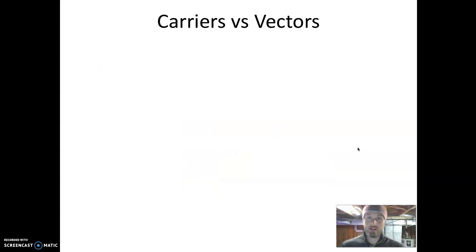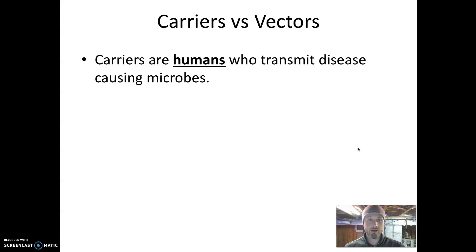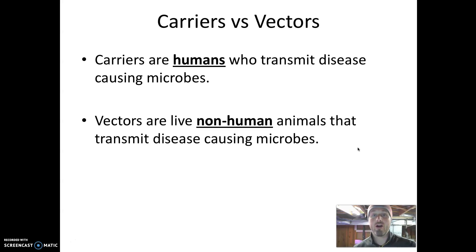Those are carriers. We want to end this video by talking about vectors and clearly defining how carriers and vectors are different. A carrier is a human who transmits a disease-causing microbe — the term carrier always refers to humans. Vectors, on the other hand, are non-human animals that transmit disease. We use the term carrier for humans that transmit disease, and the term vector for non-human animals that transmit disease.